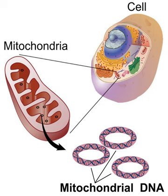An IVF technique known as mitochondrial donation or mitochondrial replacement therapy (MRT) results in offspring containing mtDNA from a donor female, and nuclear DNA from the mother and father. In the spindle transfer procedure, the nucleus of an egg is inserted into the cytoplasm of an egg from a donor female which has had its nucleus removed but still contains the donor female's mtDNA. The composite egg is then fertilized with the male's sperm. The procedure is used when a woman with genetically defective mitochondria wishes to produce offspring with healthy mitochondria. The first known child born as a result of mitochondrial donation was a boy born to a Jordanian couple in Mexico on 6 April 2016.